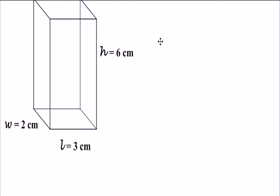So, how can we solve for the volume of a rectangular prism? Simply, we can use this formula. The volume is equal to length times width times height. So, length, in this case, would be 3 centimeters.